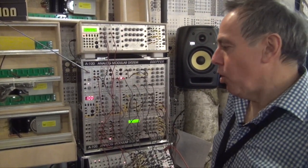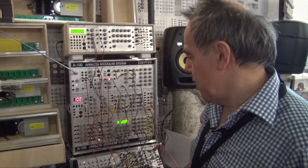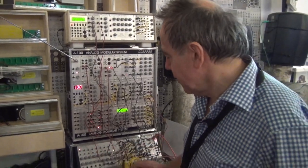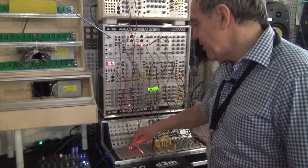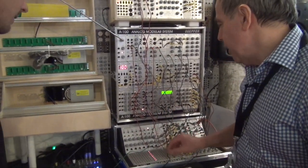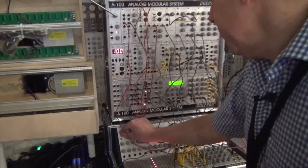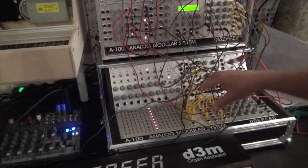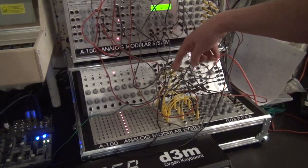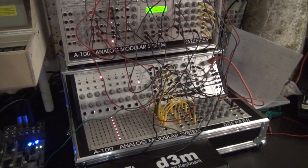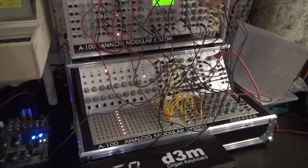What we're also working on is a new trigger sequencer. Here you see the prototype. It's very easy to understand. It outputs eight trigger signals that can be used to trigger, for example, a sampler, an envelope generator, and so on.